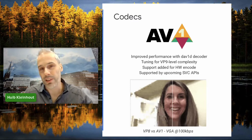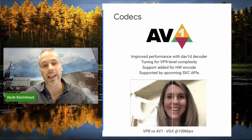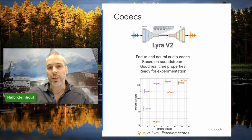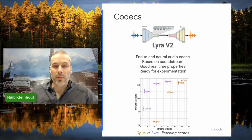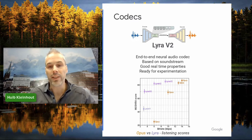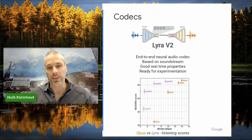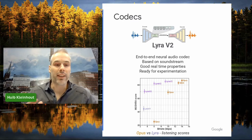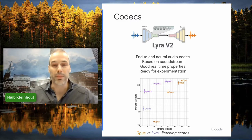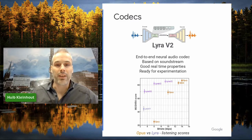Yesterday, I heard an announcement that Qualcomm ships their first mobile chipset with AV1 encode — so it's really getting there. The Google research team introduced Lyra V2, which is an end-to-end neural audio codec. It has really great real-time properties: very low latency and very good audio quality at just a few kilobits per second. It's at a state where it's ready for experimentation, and we hope to see it ultimately landing in WebRTC.